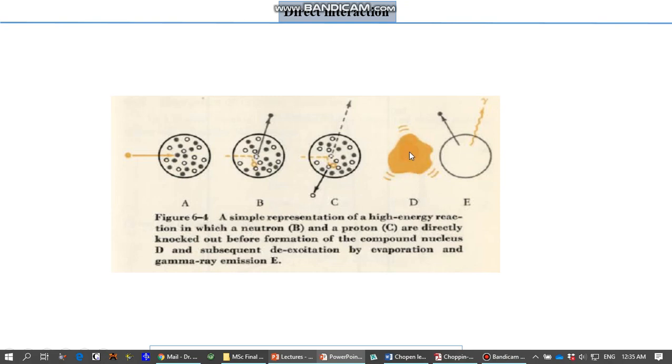When it comes back to stability, the normal procedure which was followed in the case of compound nuclear model will be followed. Again, a proton or neutron will be evaporated along with a gamma ray, and this phenomenon can be explained by compound nuclear theory.